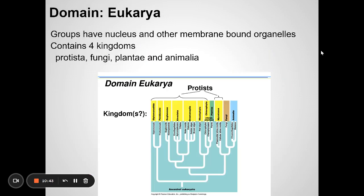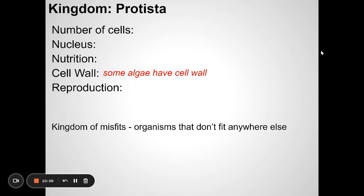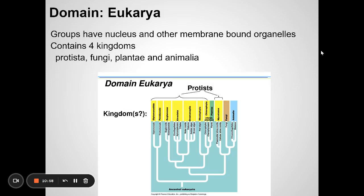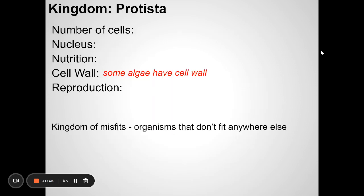The third domain — and there are three domains total: Bacteria, Archaea, and this last one — is Domain Eukarya. These are all organisms that do have a nucleus. They're more complex cells. Domain Eukarya includes four kingdoms: Protista, Fungi, Plantae, and Animalia.